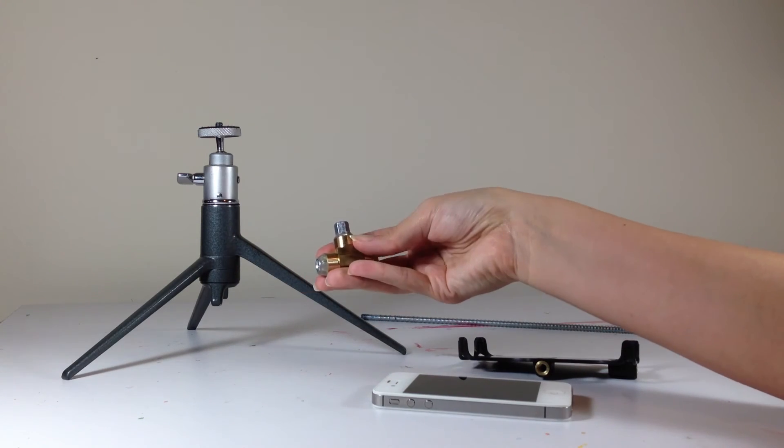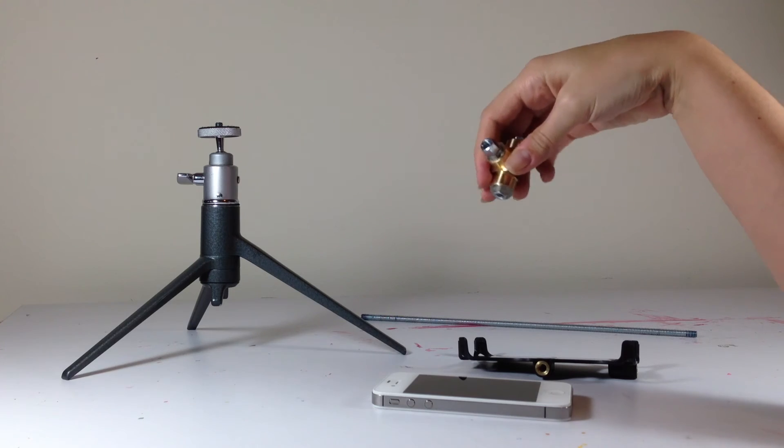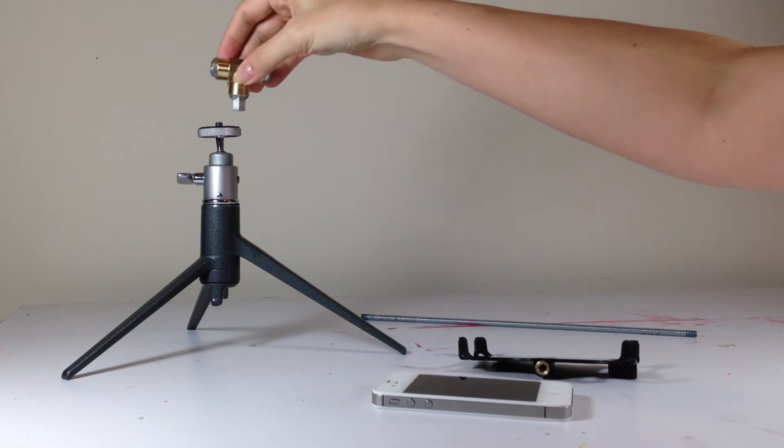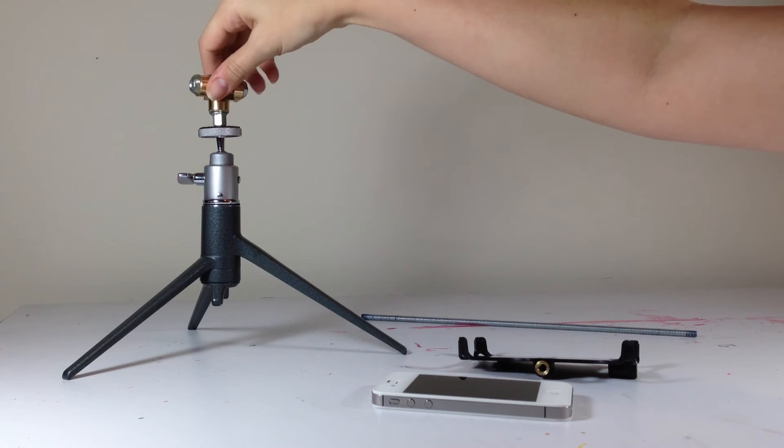So now that our adapter is all finished drying, I'm going to show you how to put all this together. So you just want to take your T-pipe and screw it down under your tripod.